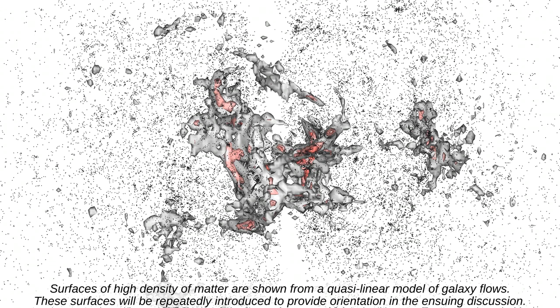Surfaces of high density of matter are shown from a quasi-linear model of galaxy flows. These surfaces will be repeatedly introduced to provide orientation in the ensuing discussion.